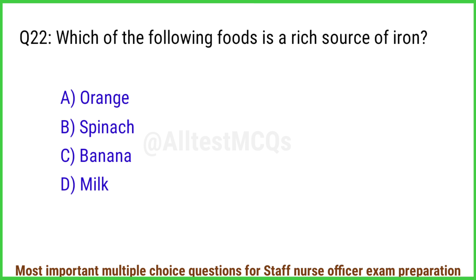Q22. Which of the following foods is a rich source of iron? The right answer is option B: Spinach.